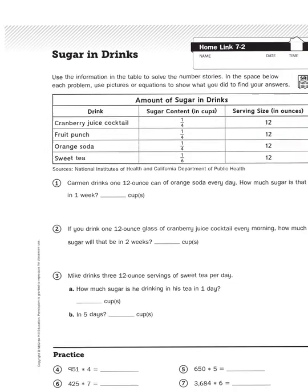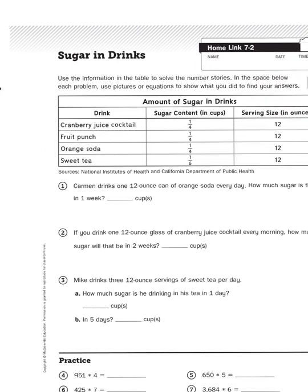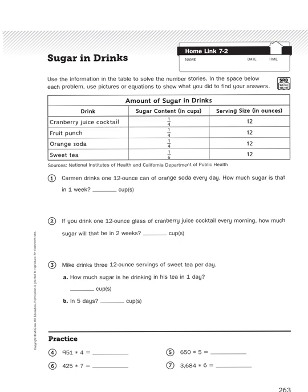So when we are thinking about the sugar in drinks, looking at problem number one, it says, Carmen drinks one 12-ounce can of orange soda every day. How much sugar is that in one week? Okay, so if Carmen drinks one can of orange soda every day, how much sugar is that in one week?